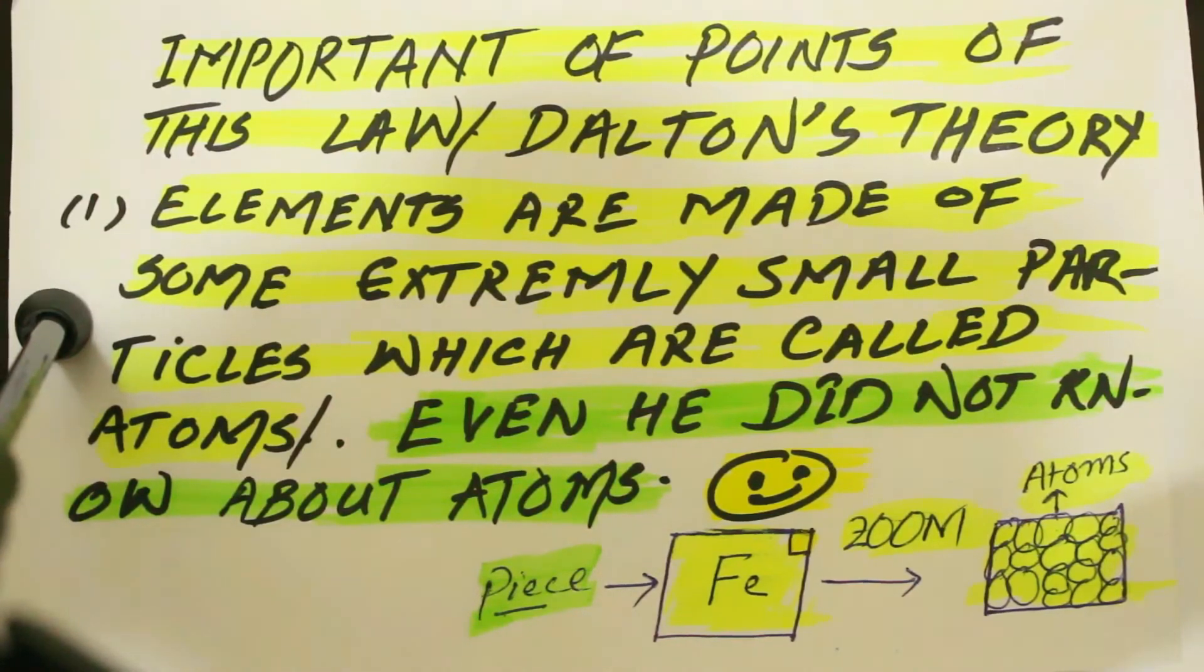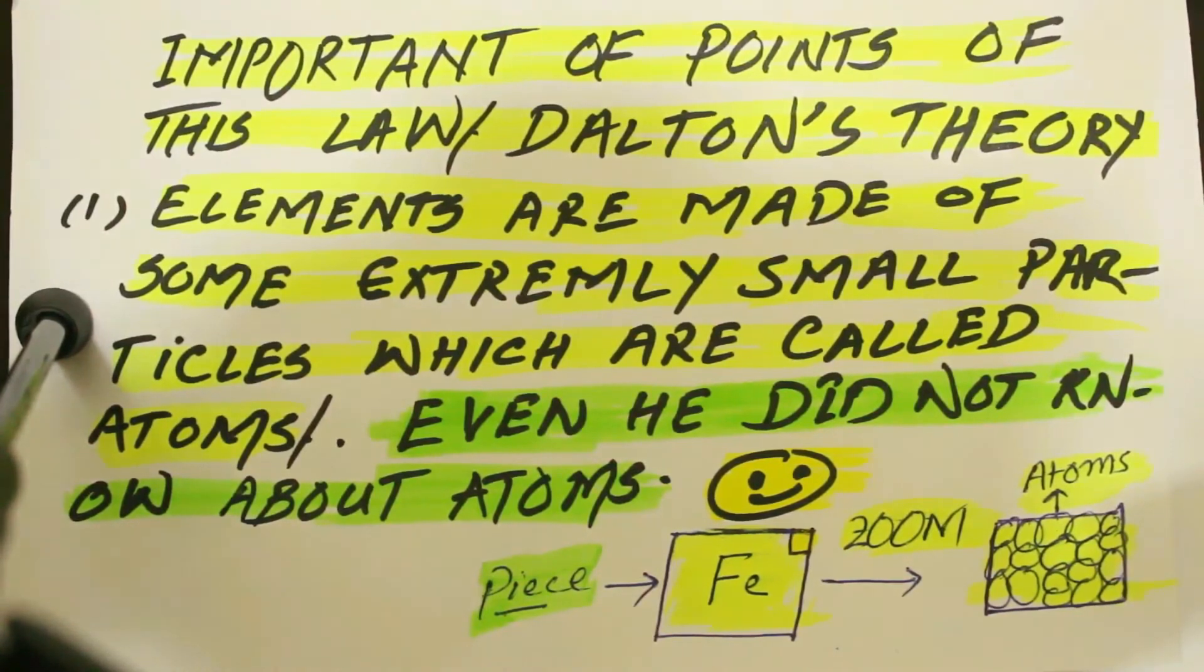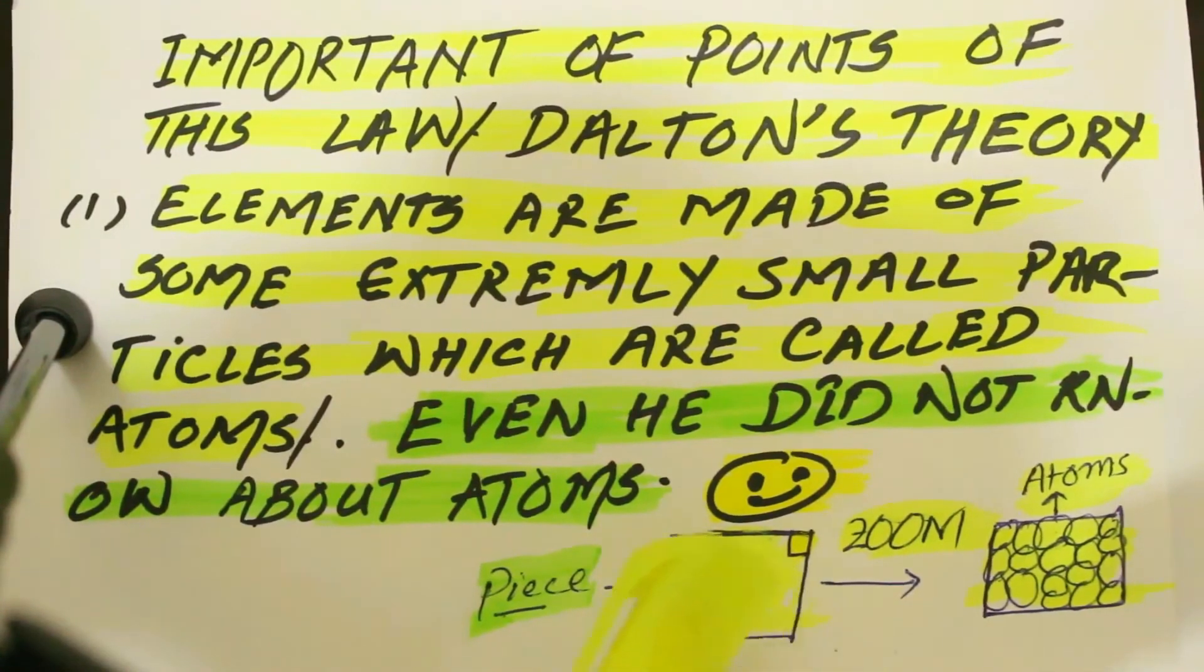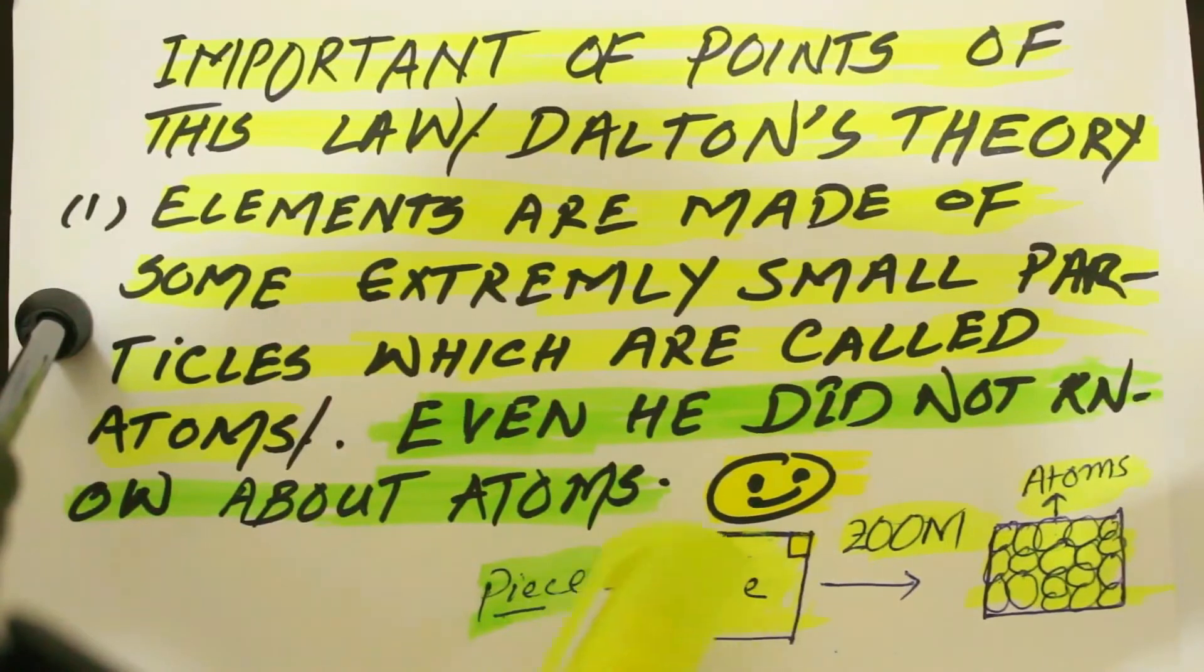Remember that Dalton characterized the elements by their atomic masses, so the atoms of one element are different from the atoms of other elements. Here you can see this example: we have an iron sheet.